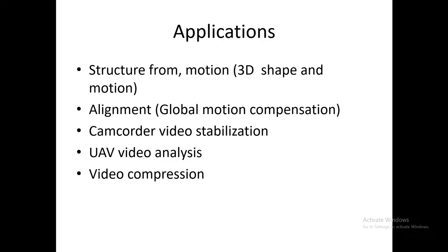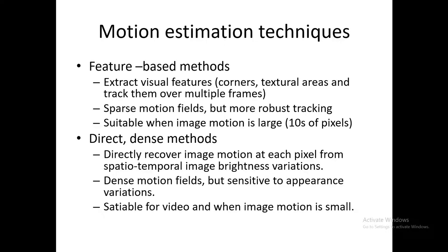There are other applications of motion in computer vision: structure from motion, where we reconstruct 3D shape from motion; alignment for global motion compensation, camcorder video stabilization, and UAV video analysis; and video compression, where motion estimation and compensation is used for more efficient compression — the better we estimate the motion, the more efficient the video compression.